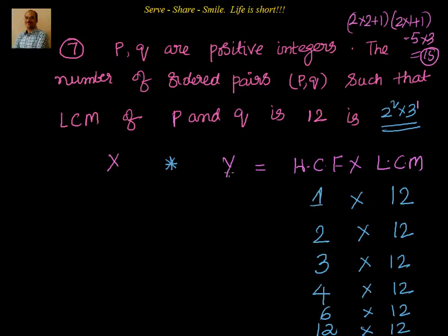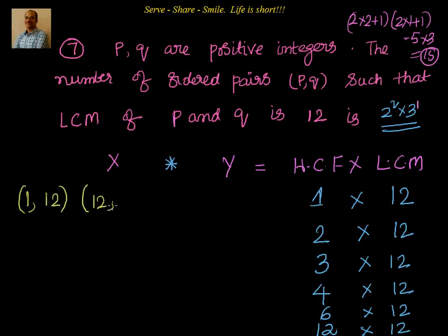For HCF=1: product=12, valid pairs are (1,12), (12,1), (3,4), (4,3). For HCF=2: product=24, valid pairs with HCF=2 are (2,12), (12,2), (4,6), (6,4). For HCF=3: product=36, pair is (3,12), (12,3). For HCF=4: product=48, pair is (4,12), (12,4). For HCF=6: (6,12), (12,6). For HCF=12: (12,12).